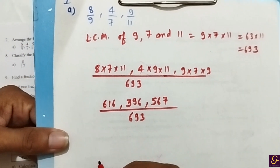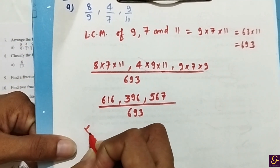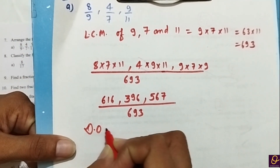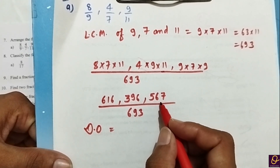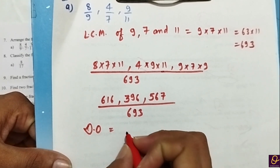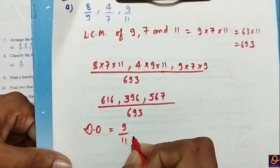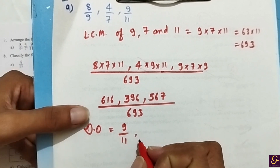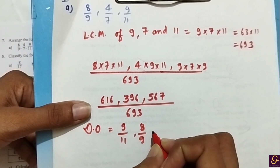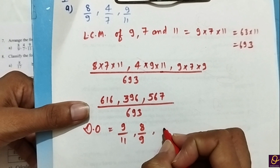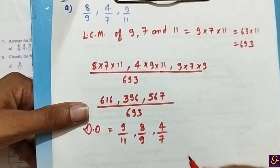Now in descending order, the greatest number is 567, which is the last fraction (9 × 11 numerator), then 616 which is the first fraction, and then 4 by 7. This completes Part A.